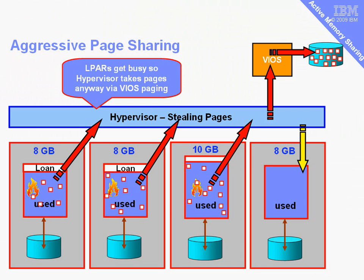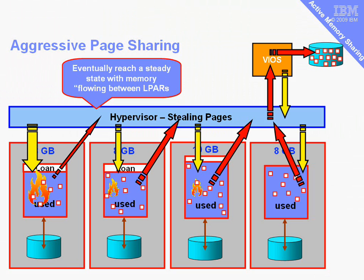In this example, we started up a new logical partition that needs some memory. Loaning wasn't enough to satisfy the memory requirement, so the hypervisor has gone more aggressive — it's paged out these little holes we can see in the logical partitions, pushed those pages out onto the VIO server, and then handed the now-free memory pages to the new logical partition. Eventually we reach a steady state where the hypervisor is regularly stealing some pages from an operating system, and the operating system is demand-paging those back in. Over time, memory pages flow from logical partitions with low demand to those with high demand for memory, paging in and out via the VIO server.